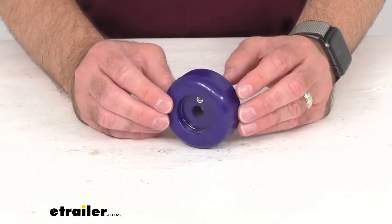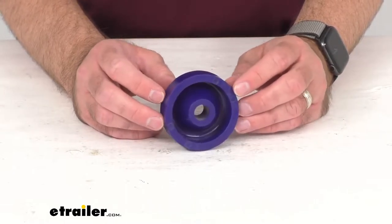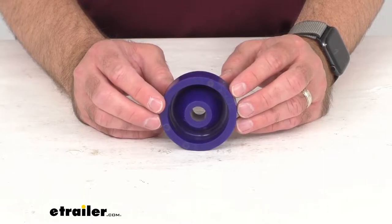End caps easily install on the same brackets that your keel, spool, or bow rollers are mounted to.